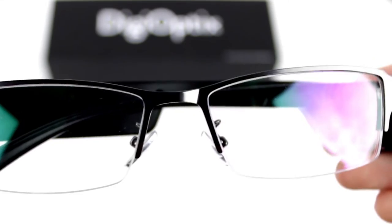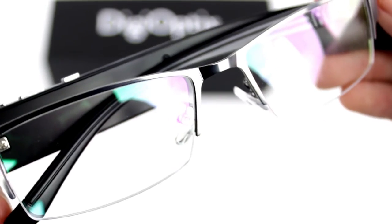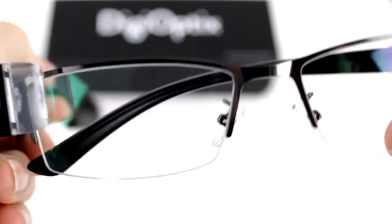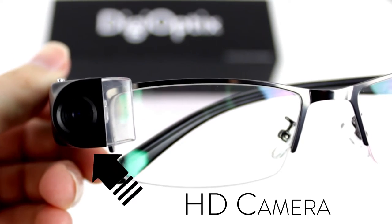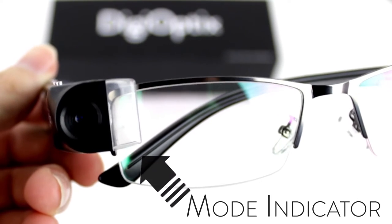How do I use it? Let's take a look at your DigiOptics Modus Smart Glasses up close before we get started. At the front end of the band, you have an HD camera with your mode indicator light next to it.